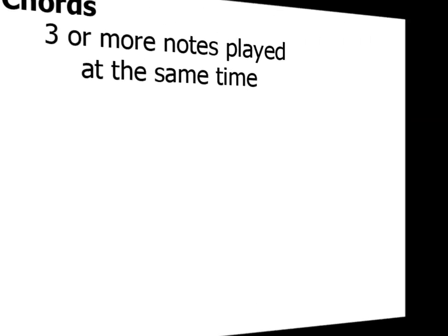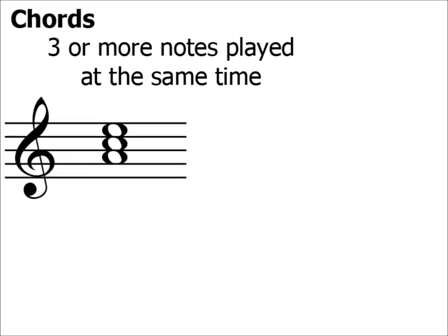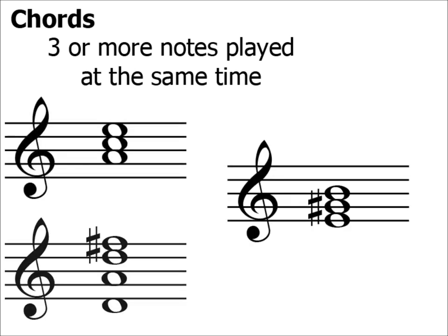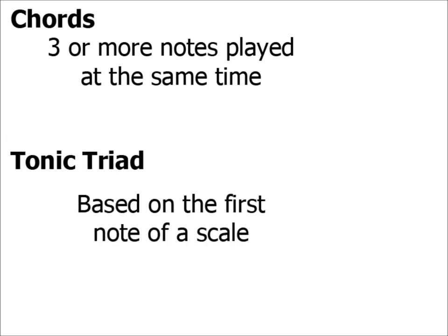A chord is the name musicians give to three or more notes that are played at the same time. All of the examples here are different types of chords. A tonic triad is probably the simplest type of chord as it is based on the first note of a scale, and this is what we'll be concentrating on in this video.